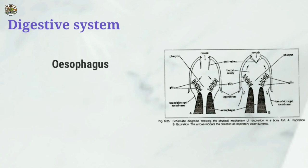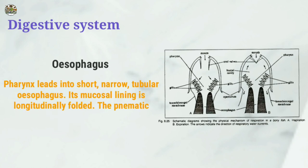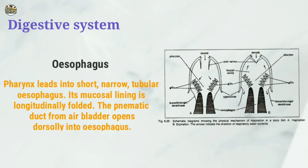The pharynx leads into a short, narrow, tubular oesophagus. Its mucosal lining is longitudinally folded. The pneumatic duct from the air bladder opens dorsally into the oesophagus.